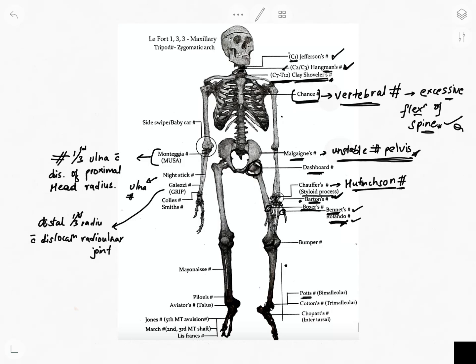Pott's fracture, also called Pott's syndrome one or Dupuytren fracture, is a variety of bimalleolar ankle fractures most commonly caused by abduction external rotation or eversion force. If it is a trimalleolar fracture, it is called Cotton's fracture.